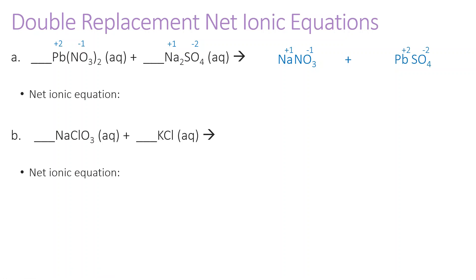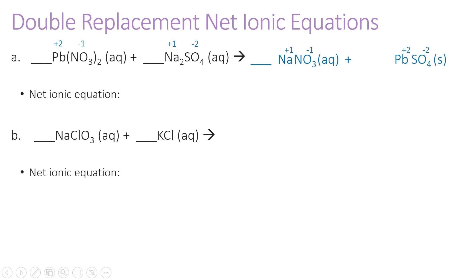We need to next predict the state of matter for these two products. If everything is aqueous, then we don't need to worry about balancing or writing a net ionic equation. Nitrates are always soluble, so sodium nitrate is going to be aqueous. Lead sulfate, however, will be a solid. So this reaction does occur. We just need to balance and write our net ionic equation.